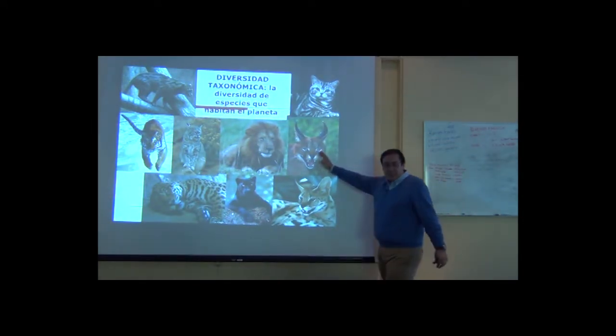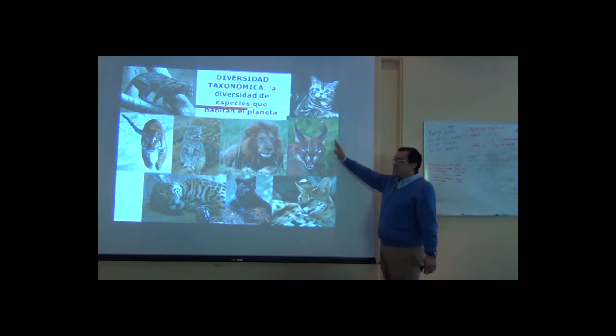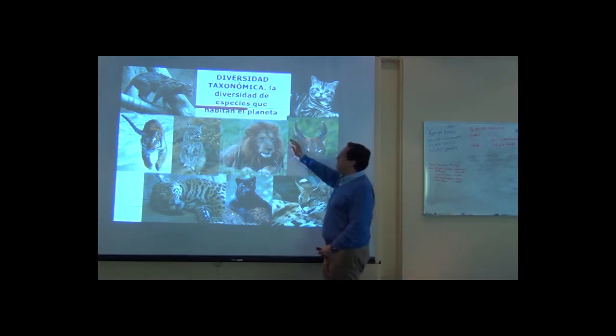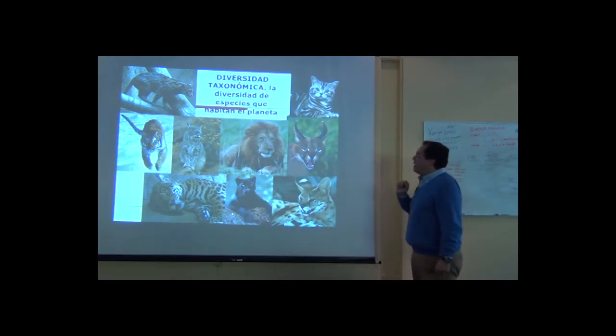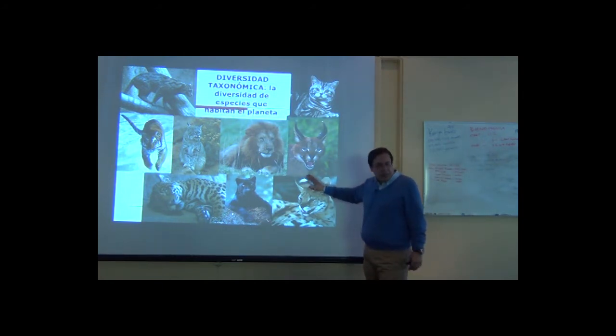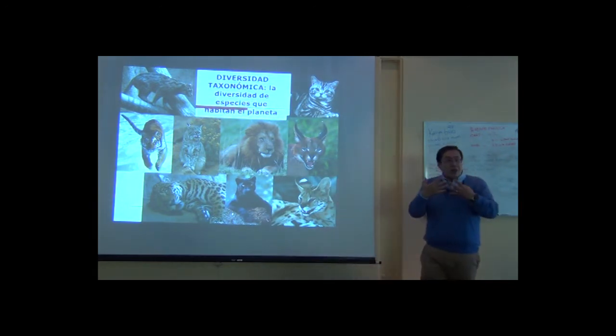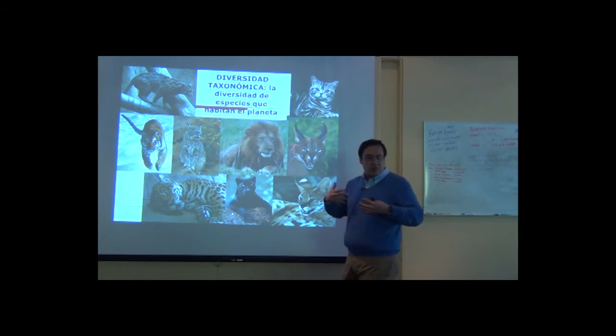The second level deals with processes that affect species—the units of evolution, the units of biodiversity. We have taxonomic diversity, defined as the study of the diversity of species on the planet. This is a very important part of the study of biodiversity because it's the one that we manage and talk about most likely and most often.